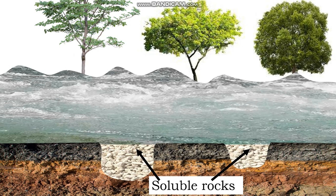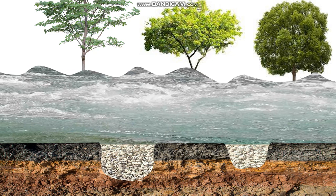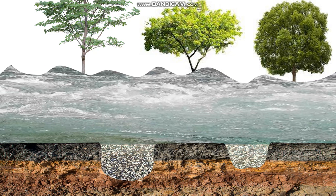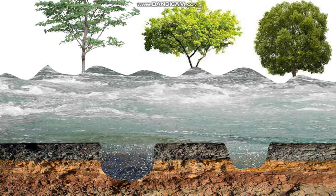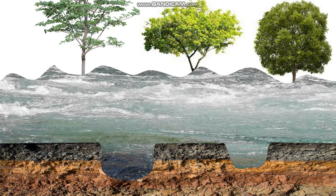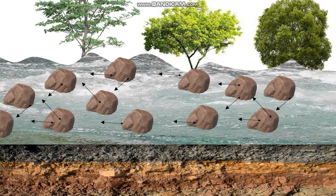The second process through which a river erodes is the process of solution. This happens where the river's bed or the river bank has soluble rocks. As the river flows, these soluble rocks will dissolve into the water, leaving behind cavities which will later be filled with water. This process is known as solution.